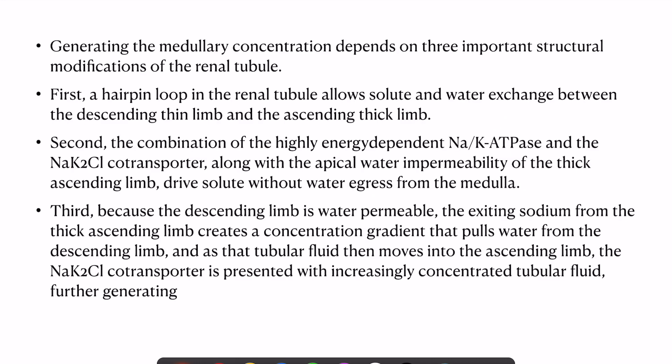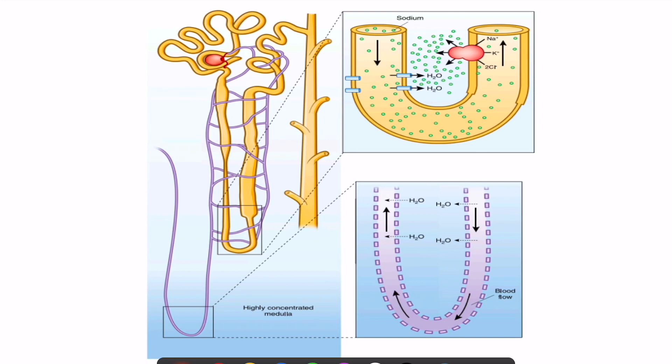Generating medullary concentration depends on three factors: the hairpin loop structure enabling solute and water exchange, highly energy-dependent channels transporting cations, and the descending limb being water-permeable. Sodium exiting the thin ascending limb creates a concentration gradient that pulls water from the descending limb, and as tubular fluid moves into the ascending limb, these transporters increase the gradient.